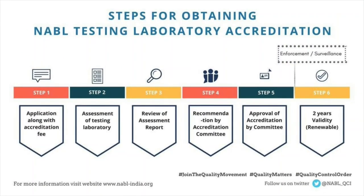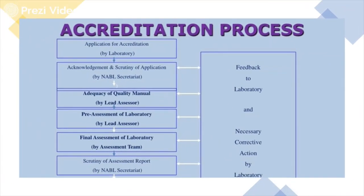The steps for obtaining testing laboratory accreditation: The first step involves the application along with the accreditation fees, followed by assessment of the testing laboratory, then review of the assessment report. The report after assessment is recommended by the accreditation committee. If everything is found fine, it gets the approval of the accreditation committee and this accreditation remains valid for two years. Everything is online — the laboratory submits the application, receives acknowledgement, and scrutiny of the application is done by the NABL secretariat. After that, adequacy of quality manuals is checked by the lead assessor, followed by pre-assessment and final assessment of the laboratory by the assessment team, and scrutiny of the assessment report.